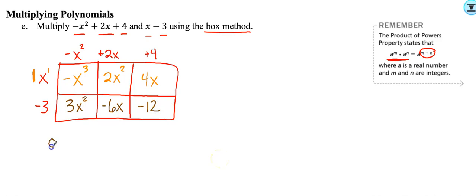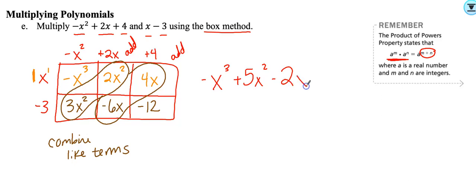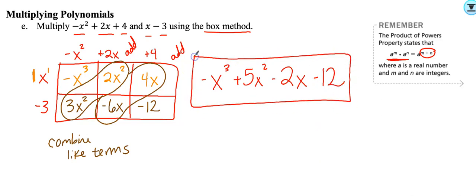After you're done multiplying, you're going to combine like terms — and it's always going to be the diagonals. The first term, negative x cubed, comes straight down. Combining the x squared diagonal, I add 3 and 2 to get 5x squared. For the x terms, add negative 6 plus 4 to get negative 2x — remember you're adding, not multiplying. And the last number is negative 12. That's your answer from multiplying your two polynomials using the box method.